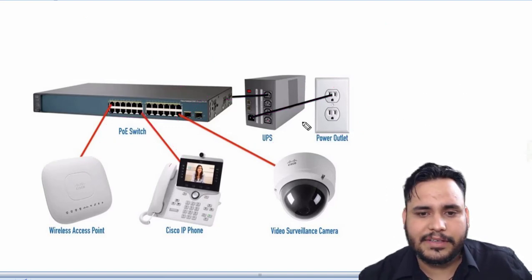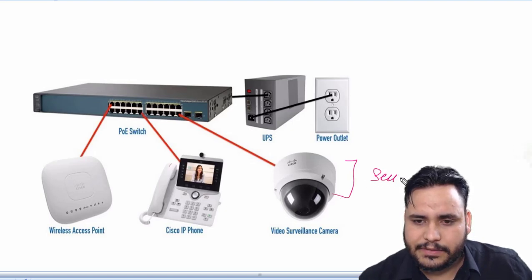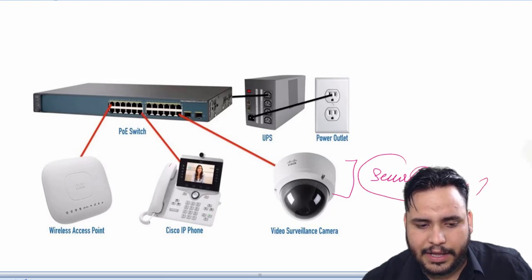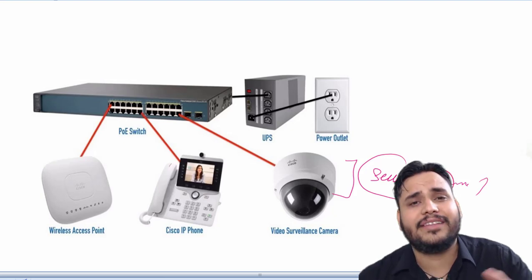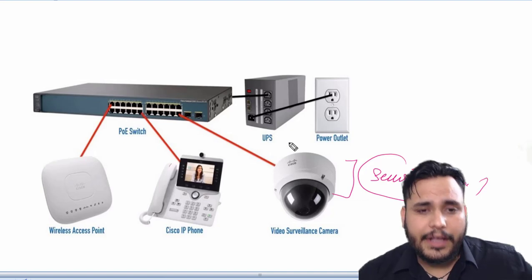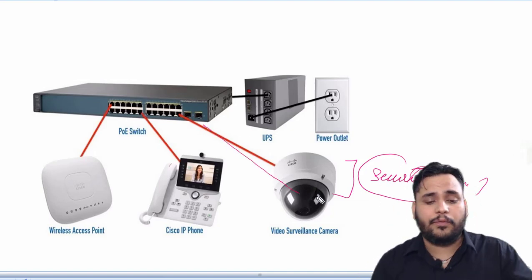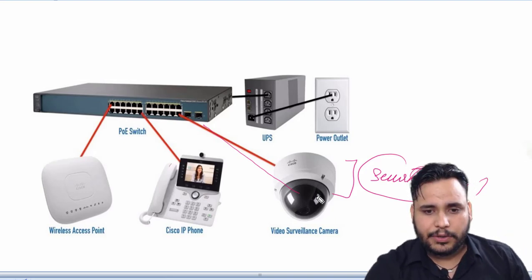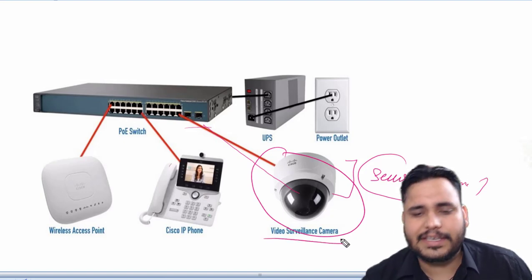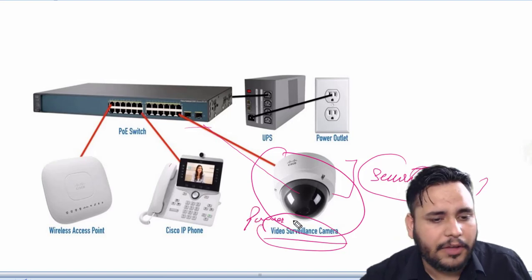Let me take an example: consider a digital security camera. This security camera requires two connections when it is installed. First, a network connection — needed to communicate with video recording and display equipment, as you can see on this design. Second, this video surveillance camera also needs a power connection.